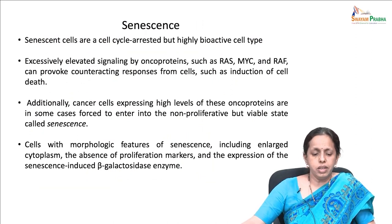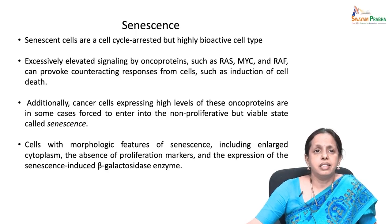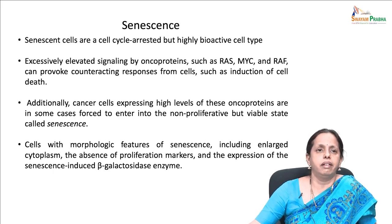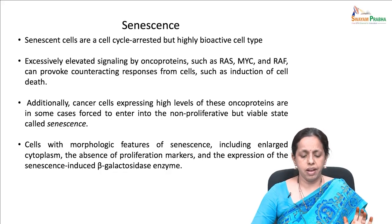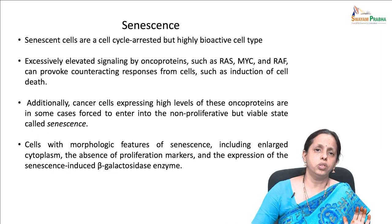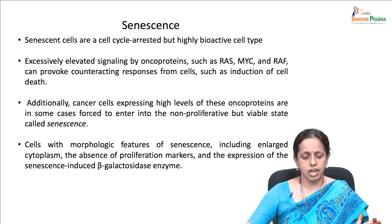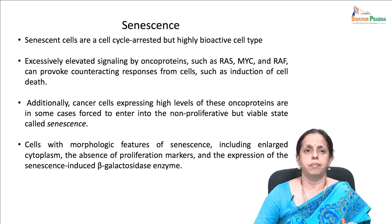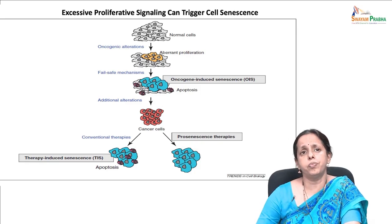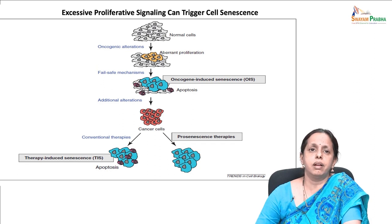What is senescence? Senescent cells are cell-cycle arrested cells but they are highly bioactive. They have excessively elevated signaling by oncoproteins such as RAS, MYC, and RAF, and they can provoke counteracting responses such as induction of cell death. Usually cancer cells expressing high levels of these oncoproteins are in some cases forced to enter a non-proliferative but viable state — this is called senescence. The role of senescence in therapy has been exploited during cancer therapy.